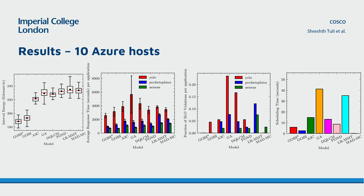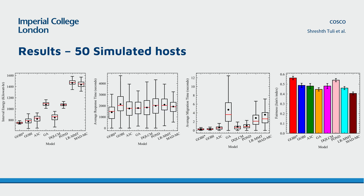These figures show results comparing GOBI and GOBI* with baseline methods on the Azure platform with 10 hosts. Both proposed models outperform state-of-the-art methods in terms of energy consumption, response time, and SLA violation rates. The bar graphs show performance metrics for each application type in the default benchmark. All performance gains are complemented by low scheduling times due to the goal-directed gradient-based optimization. Similar trends are observed with 50 simulated host machines, with low migration overheads and fair task scheduling. For more in-depth analysis, please refer to our paper.